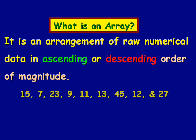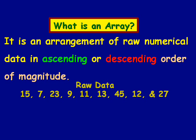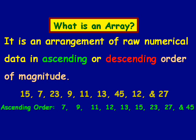Let's take this raw data we have in front of us right here. It's arranged in raw order, and what we'd like to do is set up an array. One way we could do that is set up an array in ascending order. For example, we take the lowest number, starting with 7, and we work our way all up to the highest number, which in this case is 45.